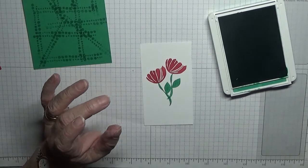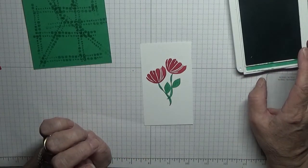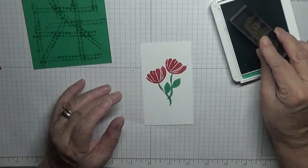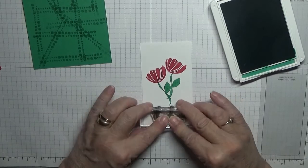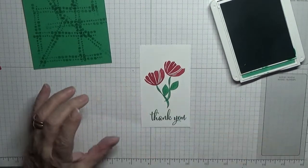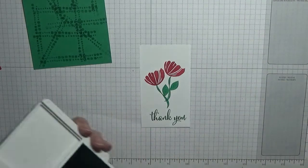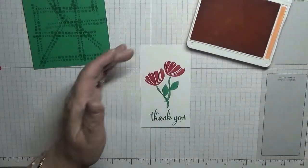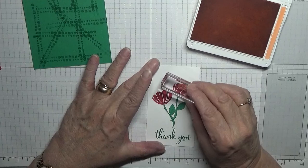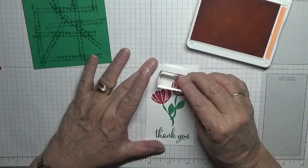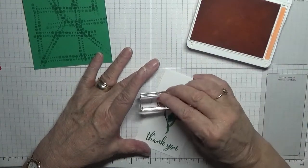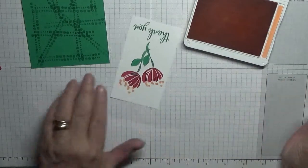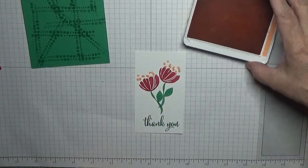Then with Call Me Clover, we're going to put the stem and leaf, one there and one there like that. Then I've got to do my thank you. I'm also going to do that in Call Me Clover. With Grapefruit Grove, we're going to do the dots above the flowers. Turn it round and do it the other way like that. That is all our stamping done.